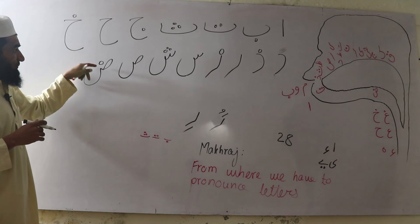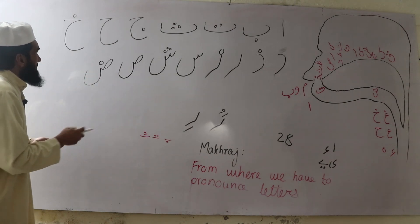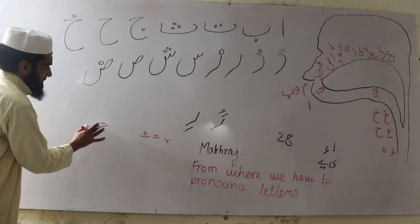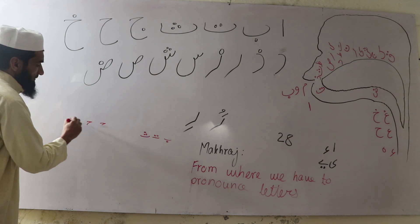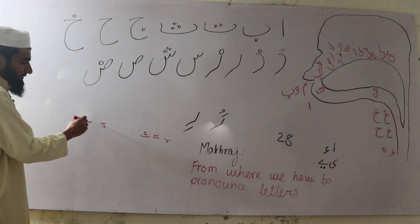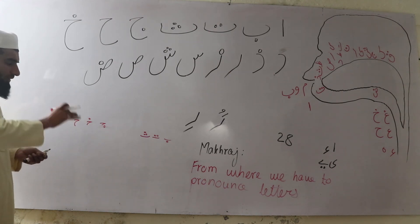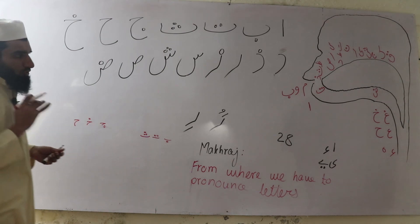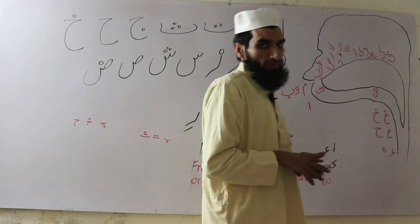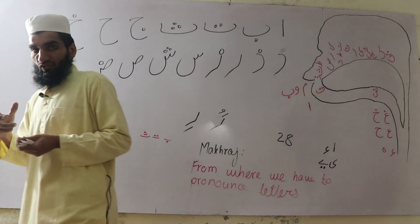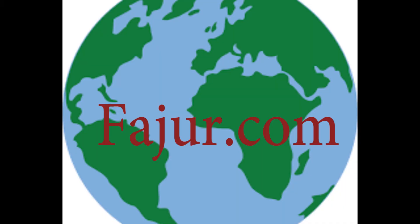We recognize different letters according to their dots. For example, a letter with one dot upside is Ha, and a letter empty from any dot is Ha. So we distinguish letters by their dots and places of pronunciation.